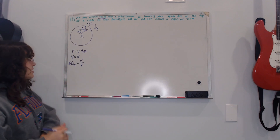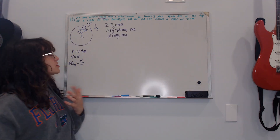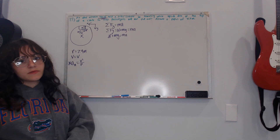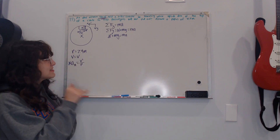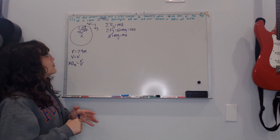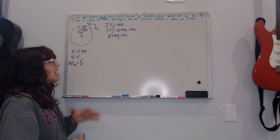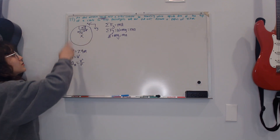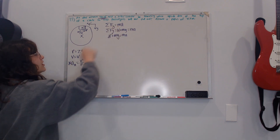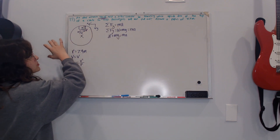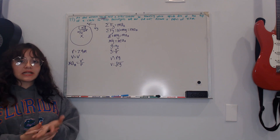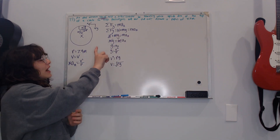For the summation of forces along the y-axis: N plus mg equals mass times radial acceleration, since both N and mg point in the same direction toward the center of the circle. Since we're at the top and there's a weightless feeling, the normal force N equals zero, so it cancels out.